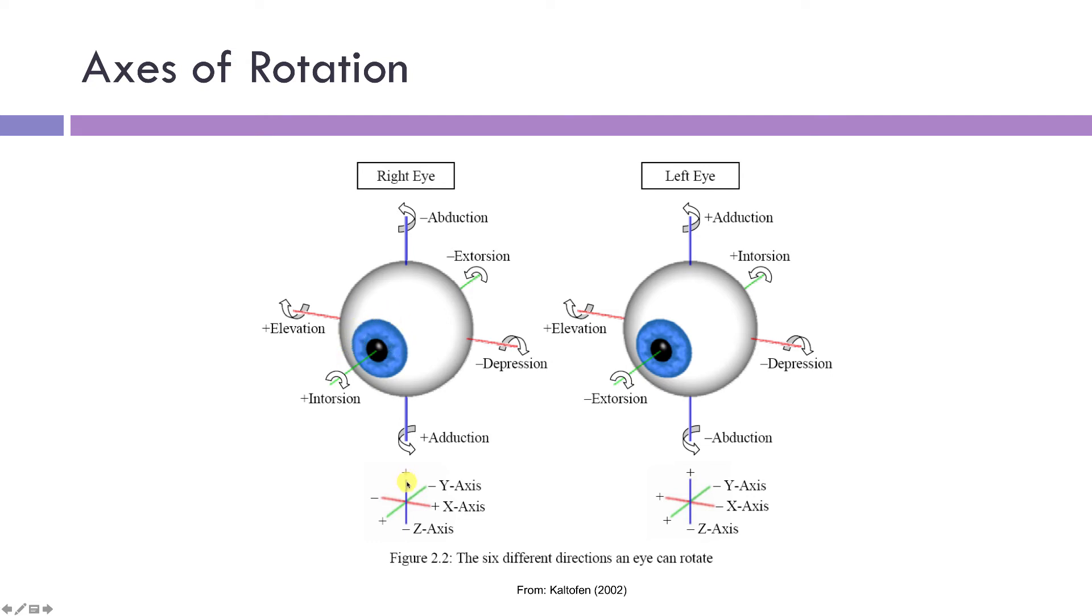So any movement around the z-axis will be horizontal, a movement around the x-axis will be vertical, and a movement around the y-axis will be torsional.